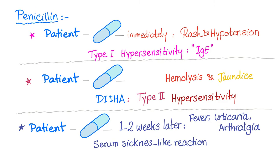To be a great student, there are three different scenarios for Penicillin. First: patient takes penicillin and immediately develops rash and hypotension — that's a type 1 hypersensitivity reaction: IgE, mast cell or basophil activation, release of histamine, etc. Second scenario: patient takes penicillin and develops hemolysis and jaundice — this is drug-induced immune hemolytic anemia, type 2 hypersensitivity reaction, cytotoxic.